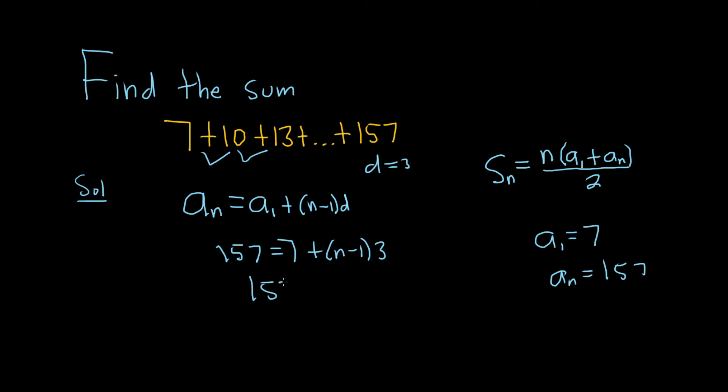So 157 equals 7 plus 3 times n is 3n, 3 times negative 1 is negative 3. So we have 157 equals 7 minus 3 is 4, plus 3n. Now we can subtract 4, that gives us 153 equals 3 times n. Divide by 3, and this is going to be 51, n is 51.